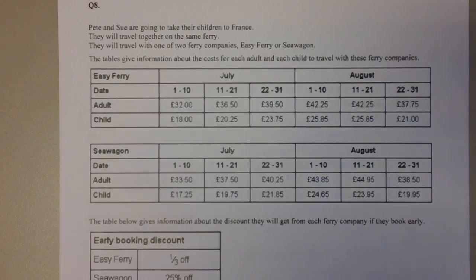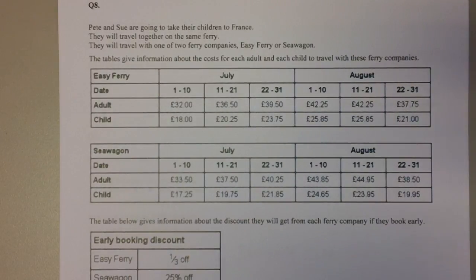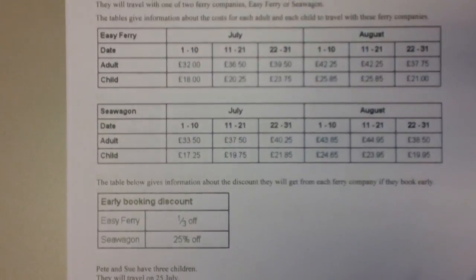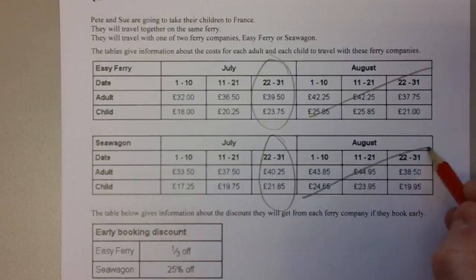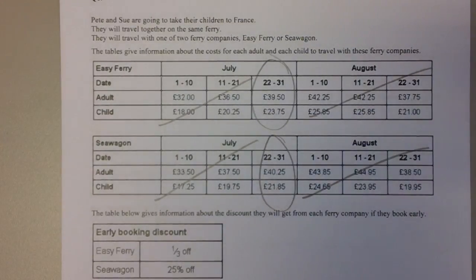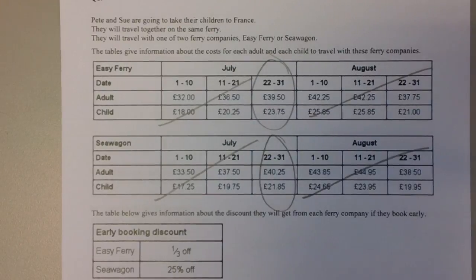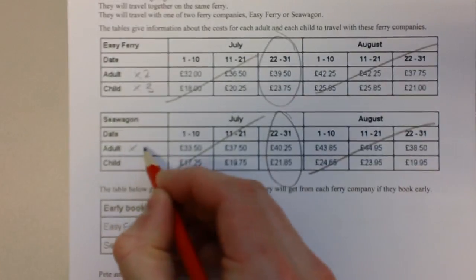Finally, question number eight. Common type of question on the exam, worth a lot of marks - five marks altogether. A lot of information - take your time and read through it all carefully. Peter and Sue are going on holiday to France. They're going to travel on the ferry. There's two companies you can choose from: Easy Ferry and Sea Wagon, and you've got the prices all laid out there. We have to make a comparison and decide which ferry company to go for based upon the price. They will travel on the 25th of July. The first job is to look very carefully at the tables and identify the right prices. 25th of July is in here, so all the rest of these numbers are irrelevant. There's Peter and Sue, who are the two adults, and the question tells us they have three children. Therefore we need two of these and three of these.